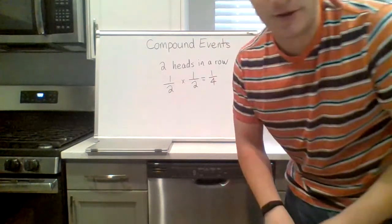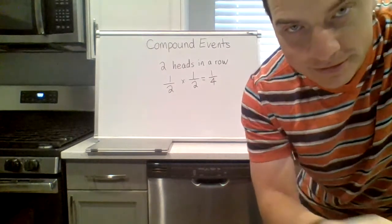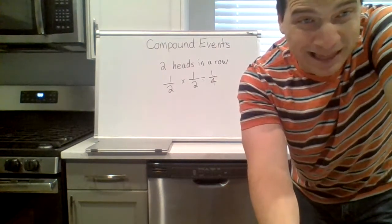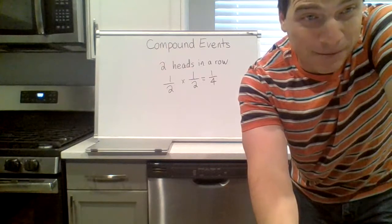Probability of two heads in a row is one fourth. Okay, we're gonna get a little bit more complicated, but not by much.